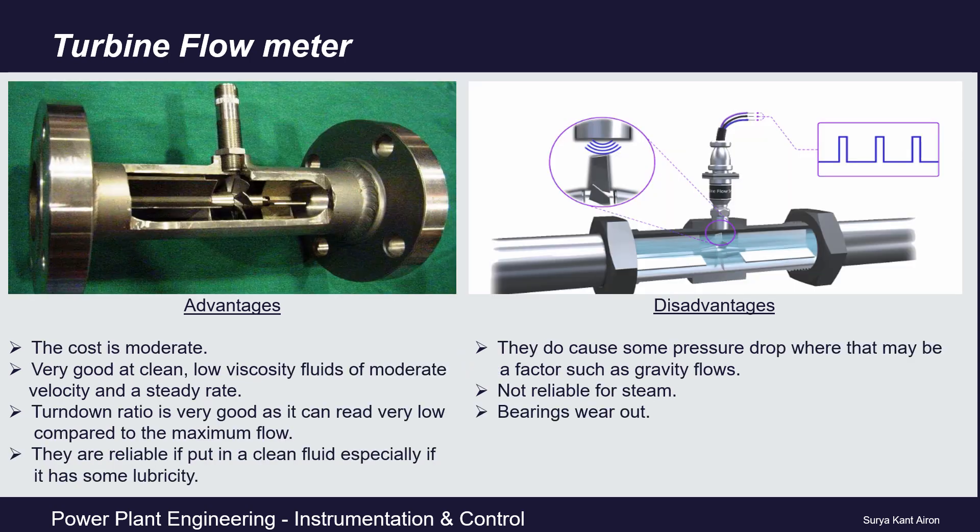Turbine flow meters use the mechanical energy of the liquid to rotate a rotor placed in the center of the meter. The fluid flowing through the turbine flow meter exerts pressure on this rotor, causing it to rotate. The rotational speed is directly proportional to the velocity of the fluid traveling through the meter. This rotation per minute is measured using a non-contact proximity sensor, which gives an indication of fluid velocity, further calibrated to provide flow rate.